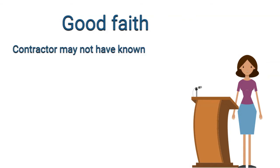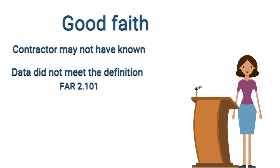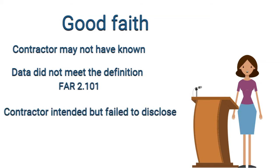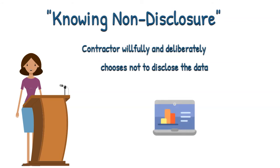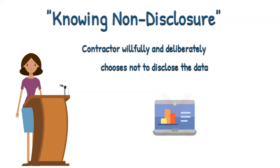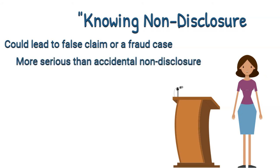In good faith, a contractor may not have known they had certain cost or pricing data and didn't disclose it to the government. Or, the contractor may not have believed the data met the definition of cost or pricing data. It may even be the case that the contractor knew they had the data and intended to disclose it to the government, but during the negotiation process failed to do so. When a contractor willfully and deliberately chooses not to disclose cost or pricing data that is reasonably available to them, the non-disclosure may rise to a knowing non-disclosure. The knowing non-disclosure could also rise to the level of a false claim or a fraud case. A knowing non-disclosure is a much more serious violation than an accidental non-disclosure.